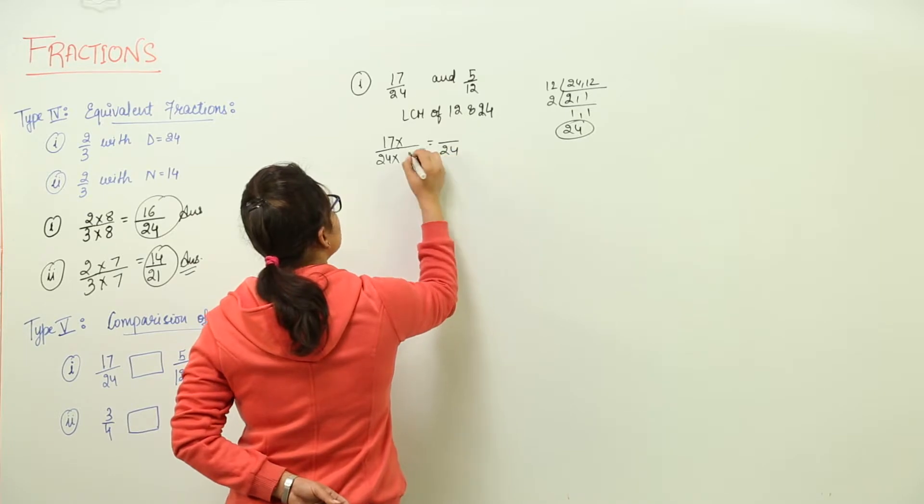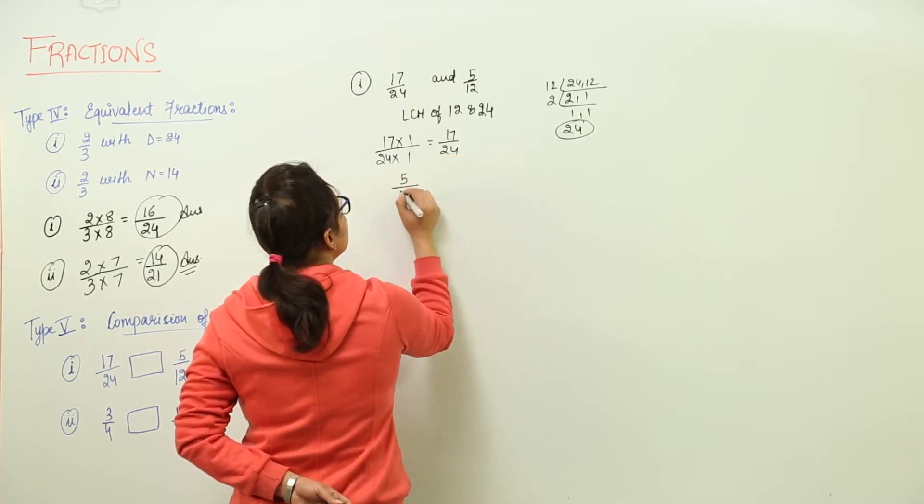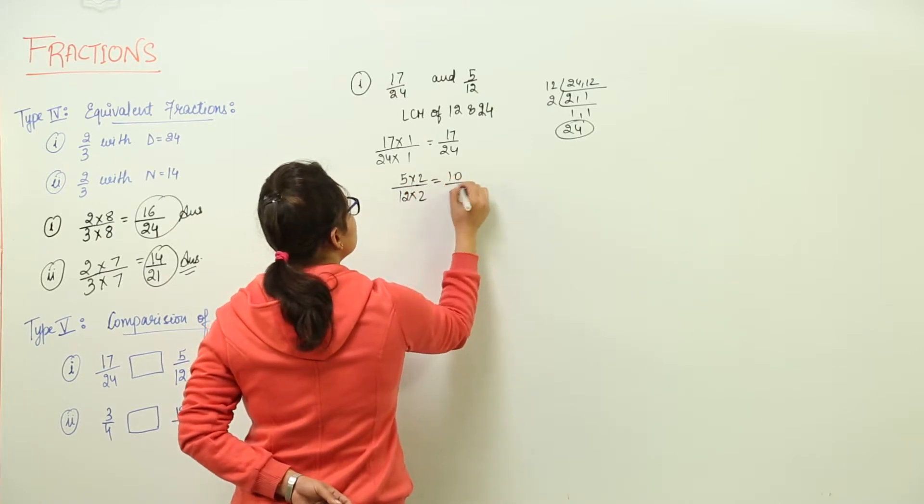Now for the first one, it will be multiplied with 1. So we get 17 upon 24. For the next one, we have to multiply both with 2 to get 10 over 24.